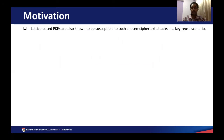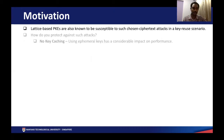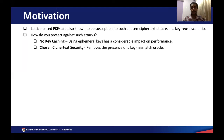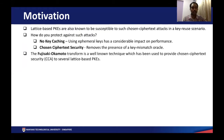Lattice-based public key encryption schemes are also known to be susceptible to such chosen ciphertext attacks when static keys are used. There are two ways to protect against such attacks. The first straightforward technique is to totally avoid key caching, but it has a considerable impact on performance as you are using ephemeral keys. The second more concrete technique is to adopt chosen ciphertext security, which concretely removes the presence of a key mismatch oracle. The Fujisaki-Okamoto Transform is one such technique that has been adopted by several lattice-based schemes to provide chosen ciphertext security.